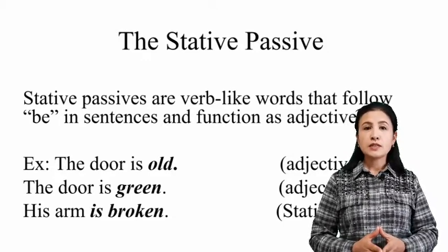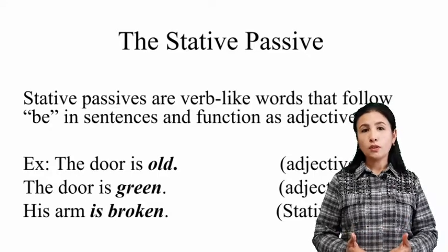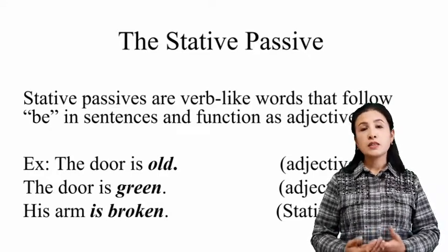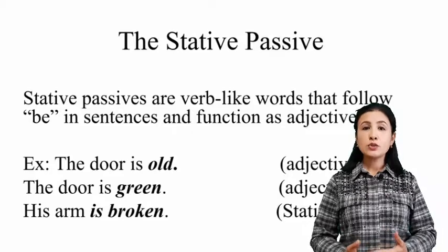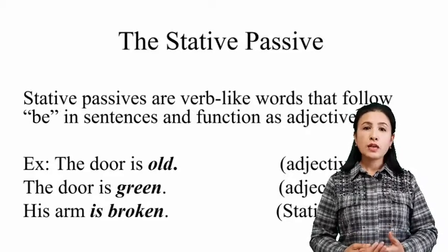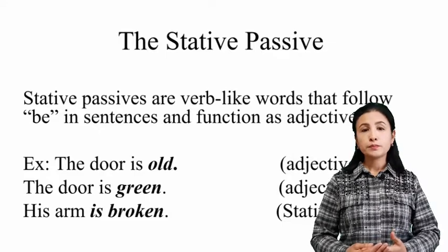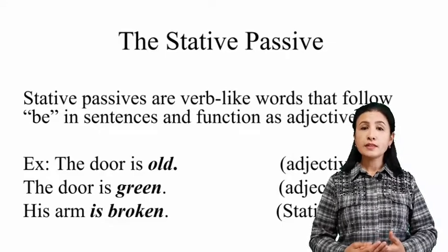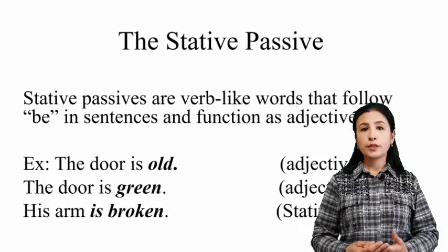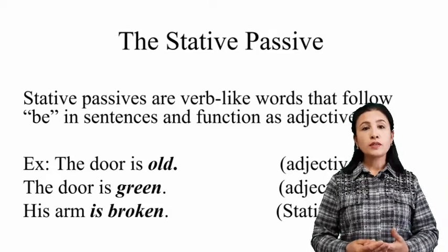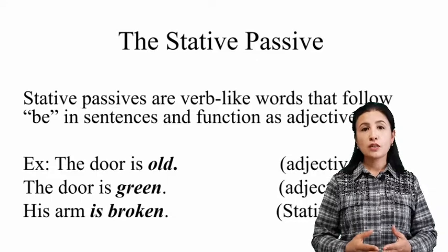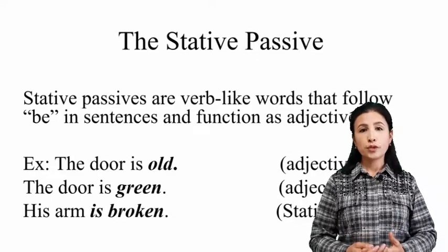The first sentence is 'The door is old.' The next sentence: 'The door is green.' In these two sentences, the two adjectives — old and green — describe the noun 'door.' And the third sentence: 'Her arm is broken.' In this sentence, 'broken' is a state. Why? Because the condition of the arm is broken.